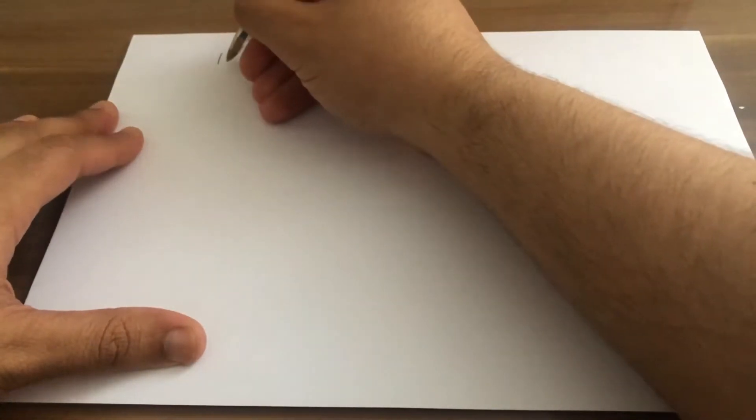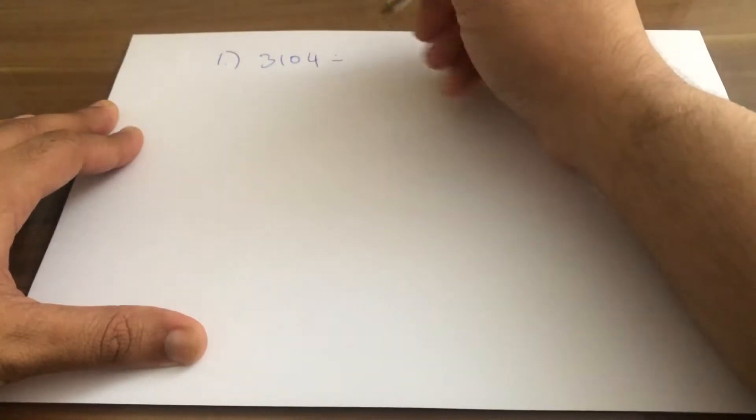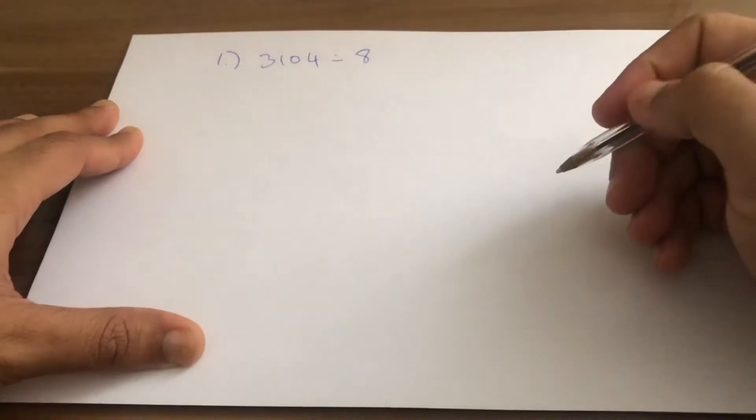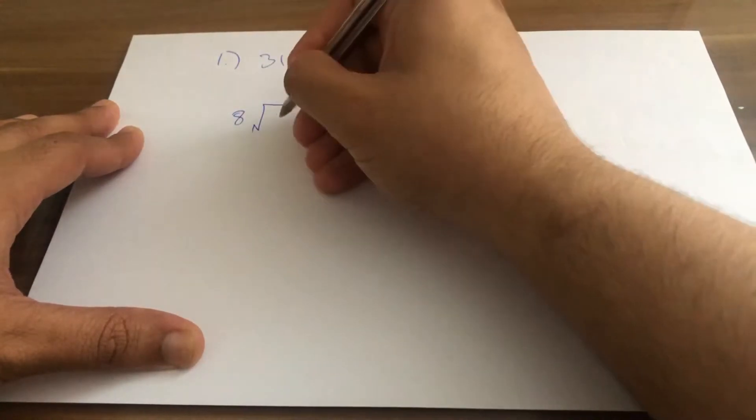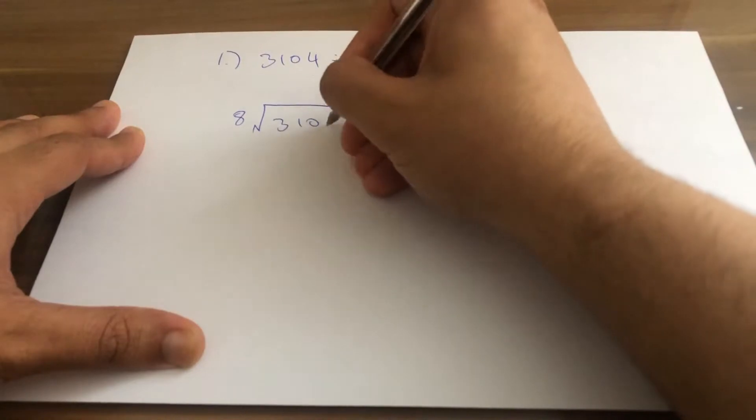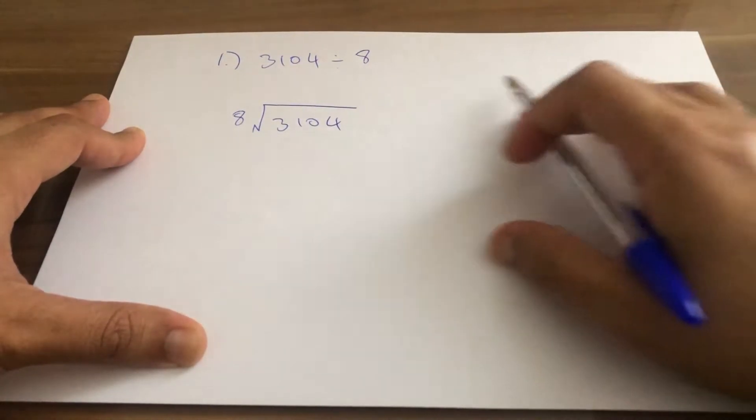Let's bring the numbers into the frame. Worked example number 1: 3104 divided by 8. How would we do this? So 8 goes into 3104. How would we work with this?